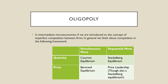In Intermediate Microeconomics 2, we're introducing the concept of imperfect competition between firms, meaning that they impact the prices and profits that are in play. We like to think about things in the following framework, where firms compete over quantity, they compete over price, and whether they're making their choices simultaneously or sequentially.